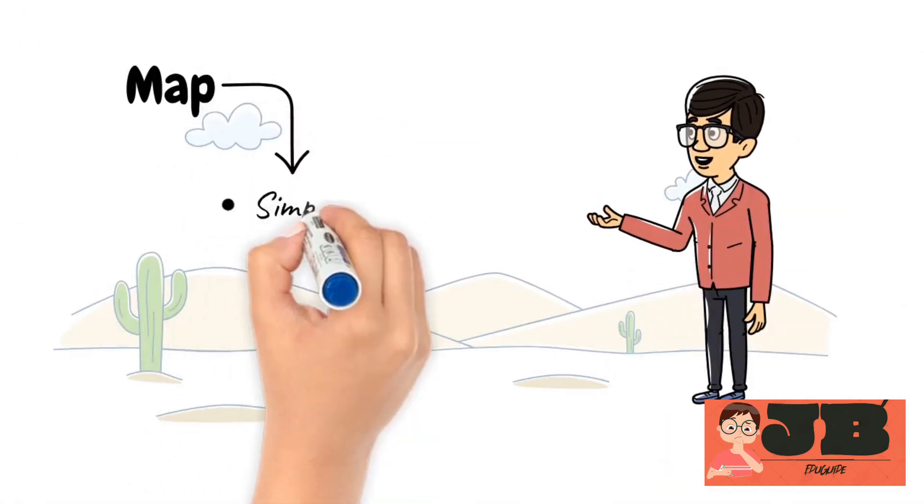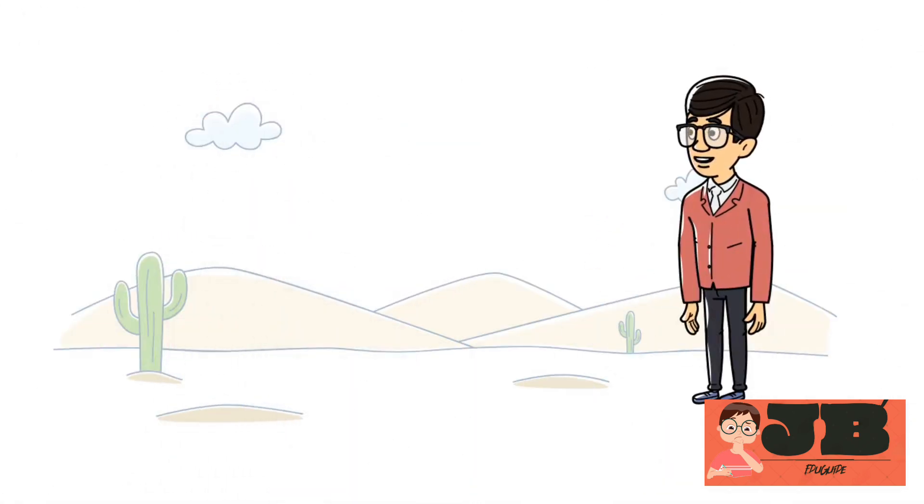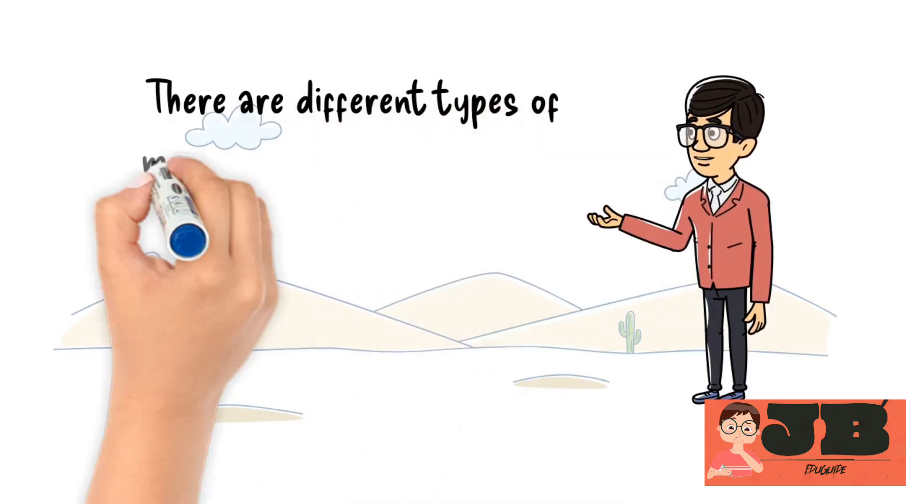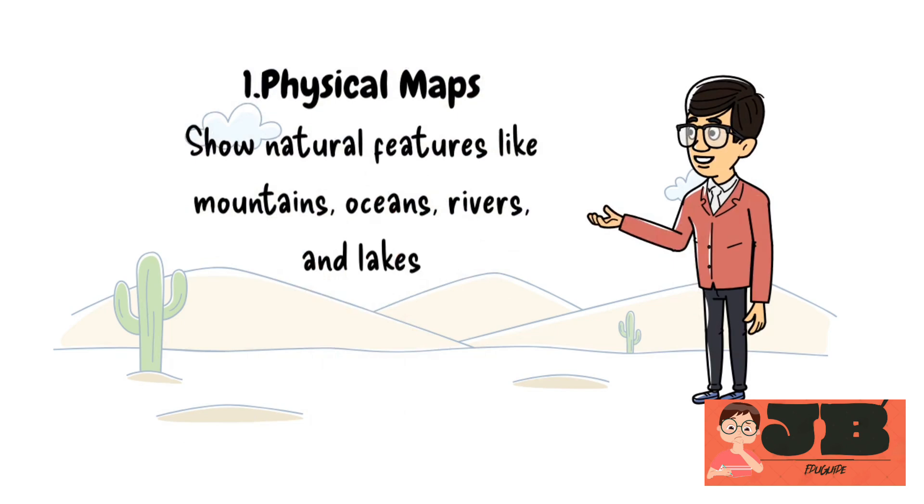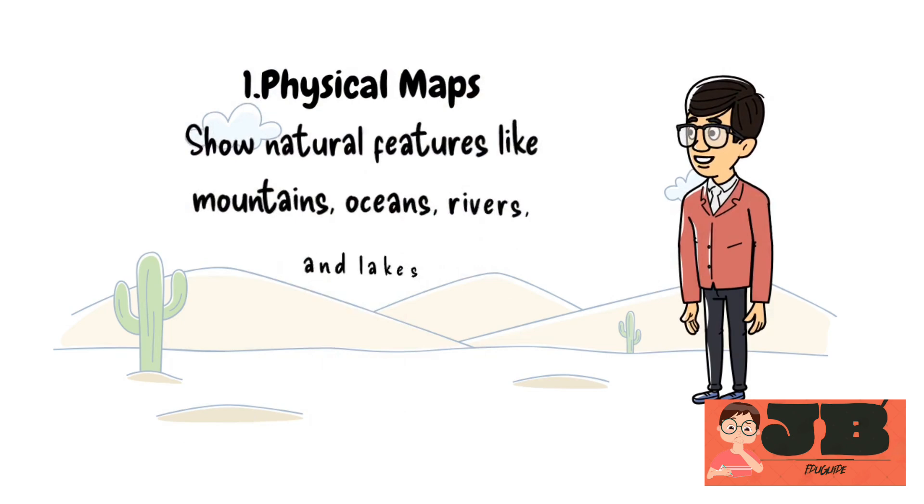Maps can be simple or complex, depending on the amount of detail they include. There are different types of maps, each serving a specific purpose. First, physical map, which shows natural features like mountains, oceans, rivers, and lakes. Like this.